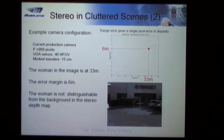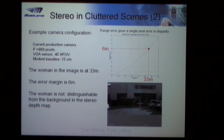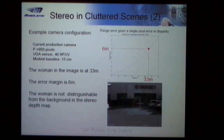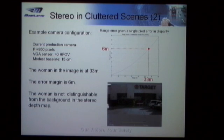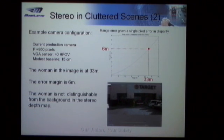Let's go through a numerical example. Consider a classic production camera — wide VGA, 40-degree field of view, giving a focal length of about 950. This is what we use in our aftermarket systems, with a modest baseline of 15 centimeters. The woman in this case is at 33 meters. If we look at the error due to one pixel error in the disparity map, we find the depth error around that point is around 6 meters. That means we'll never be able to tell the difference between the pedestrian and the background. These specular surfaces further mean the depth map on the building itself will be very noisy.